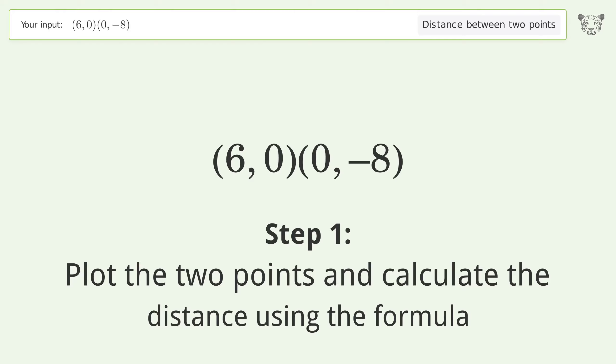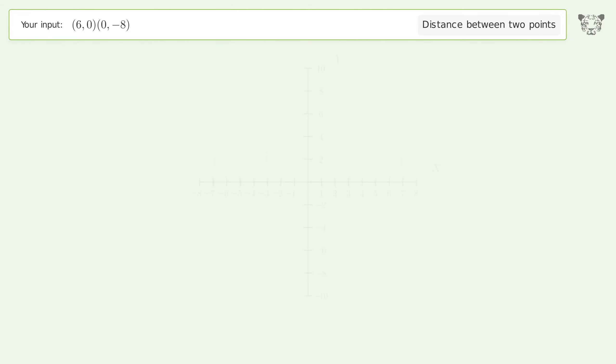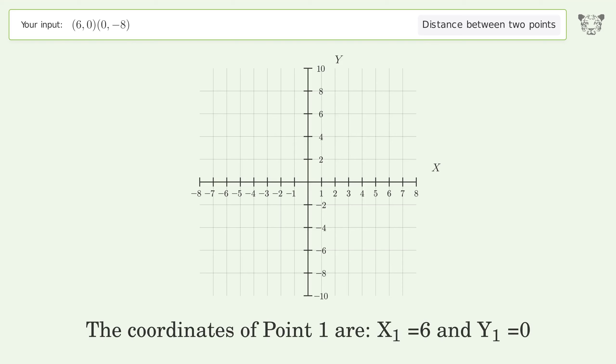The coordinates of point 1 are x1 equals 6 and y1 equals 0. The coordinates of point 2 are x2 equals 0 and y2 equals negative 8.